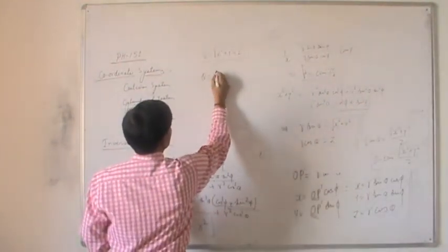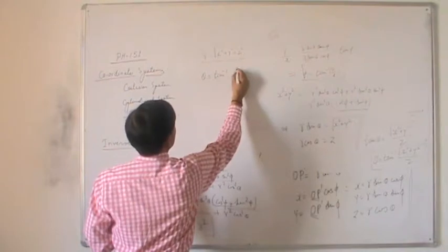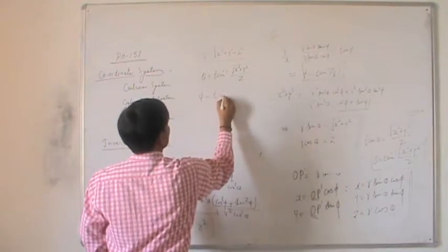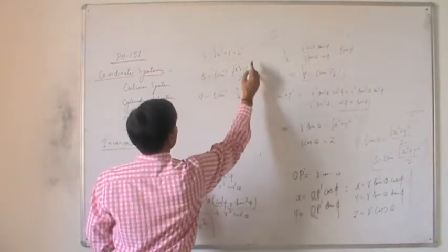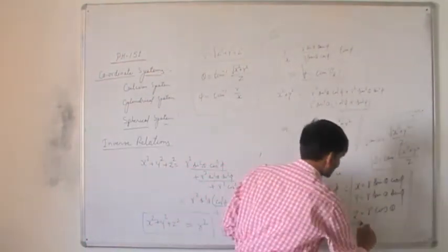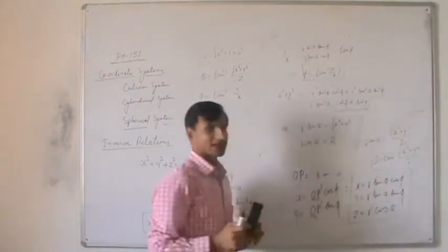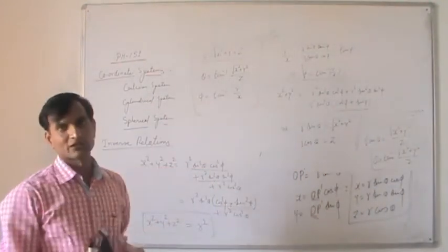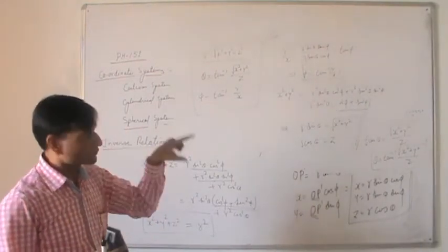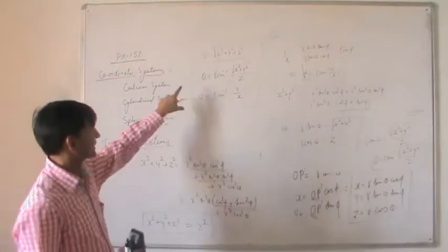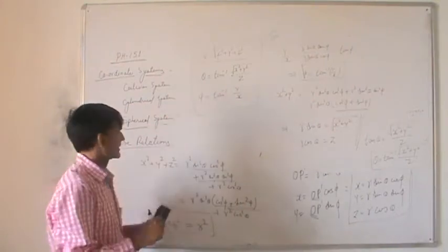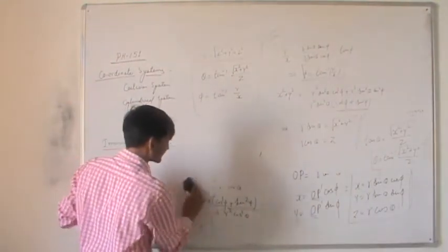So finally, theta equals tan inverse of (square root of X squared plus Y squared) divided by Z, and phi equals tan inverse of Y by X. These two sets of transformation equations can be used to convert R, theta, phi to X, Y, Z and vice versa.